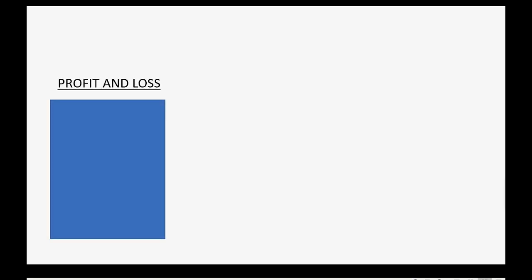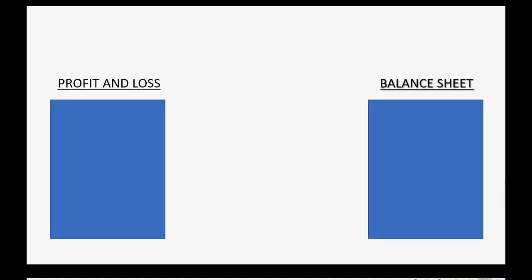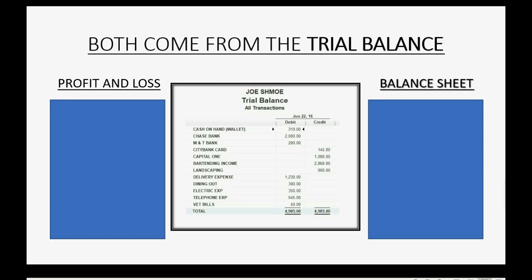The profit and loss shows how well you did during a period of time. The balance sheet shows the current value of the company at any given moment. But where do they get their numbers from? All the numbers on both of these reports come from the trial balance. After you run your trial balance, the income and expense accounts get transferred over to the profit and loss, and the assets and liabilities — the rest of the accounts in the trial balance — get placed on the balance sheet.